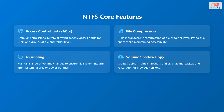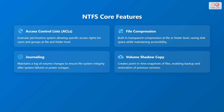The core features of NTFS include: Access Control Lists (ACLs), which provide a granular permission system allowing specific access rights for users and groups at the file and folder level. File compression provides built-in transparent compression at the file or folder level, saving disk space while maintaining accessibility. Journaling maintains a log of volume changes to ensure file system integrity after system failures or power outages. Volume shadow copy creates point-in-time snapshots of files, enabling backup and restoration of previous versions.